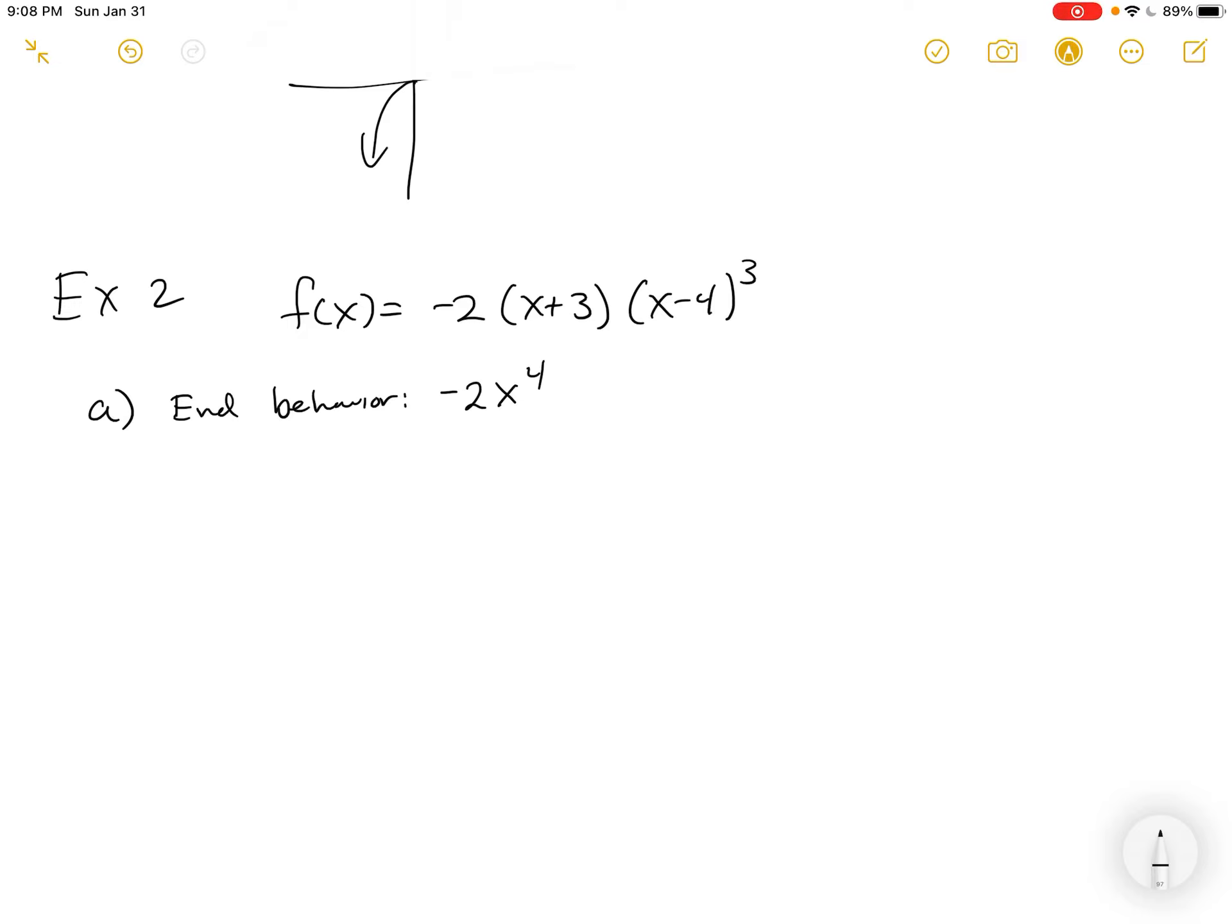Remember what negative 2x to the fourth looks like. It looks very similar to negative 2x squared, meaning it's going to be a parabola that opens down and is a little narrow. More narrow than the original parabola. But it's going to open down, meaning we're shooting down in both directions as we look at it for large values of x. So we'll keep that in mind.